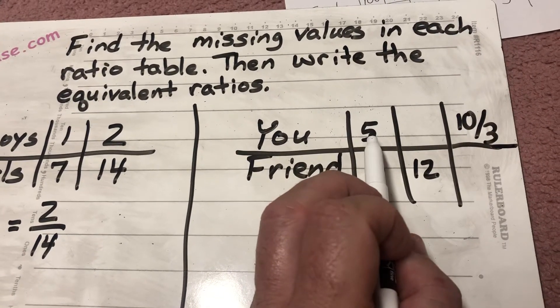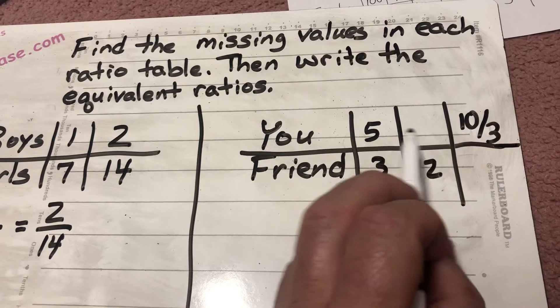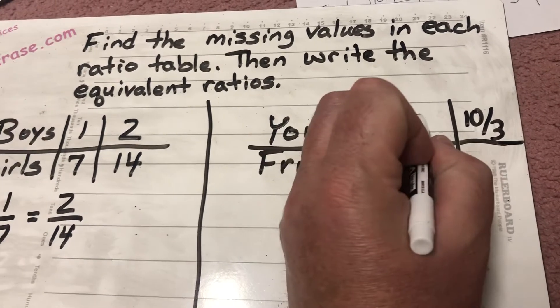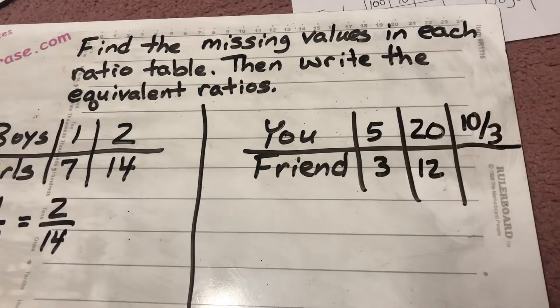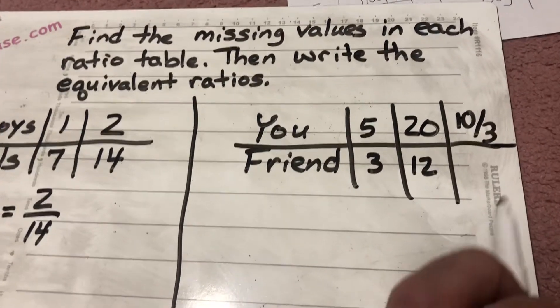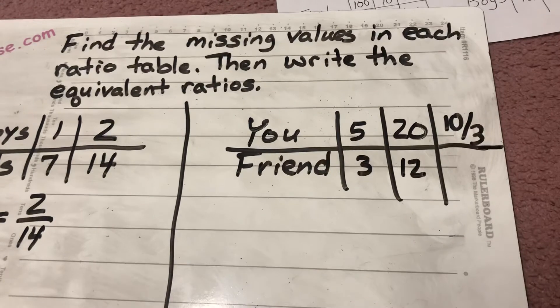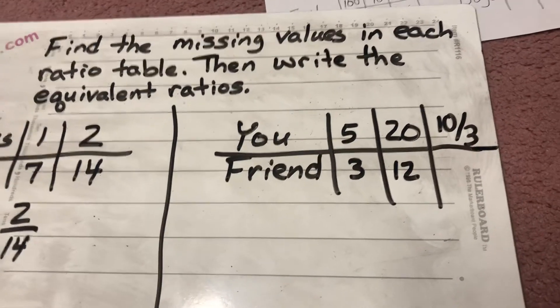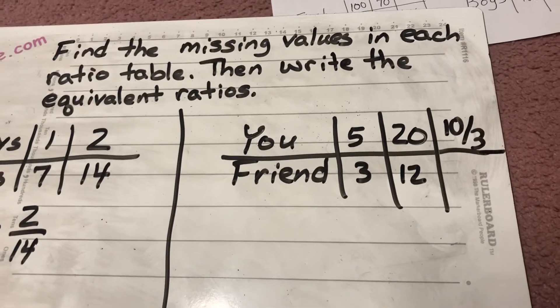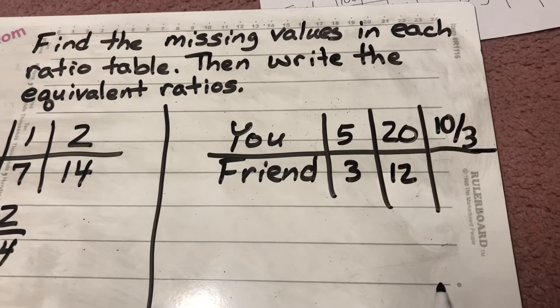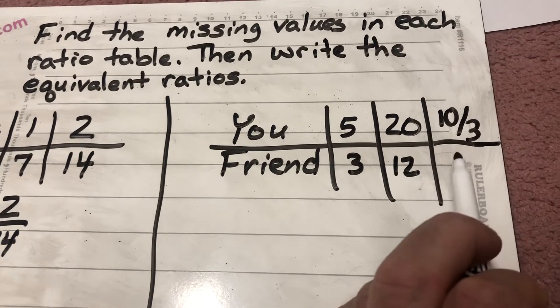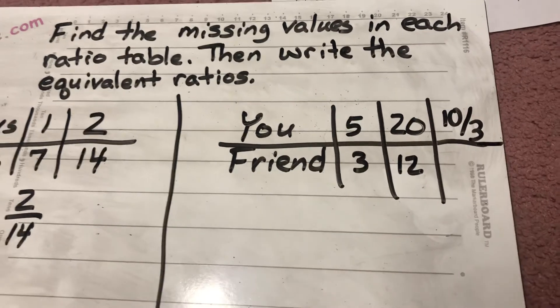Just like I'm going to have to do 5 times 4 to get this number here. And sure enough, 5 times 4 is 20. So that's the number that goes there. Now this one's a little more interesting because it gives us a fraction as 10 over 3. And I'm purposely giving you one like this because there's going to be one like this on your assignment. So I have to ask myself, well, what did they do to get this 10 over 3?